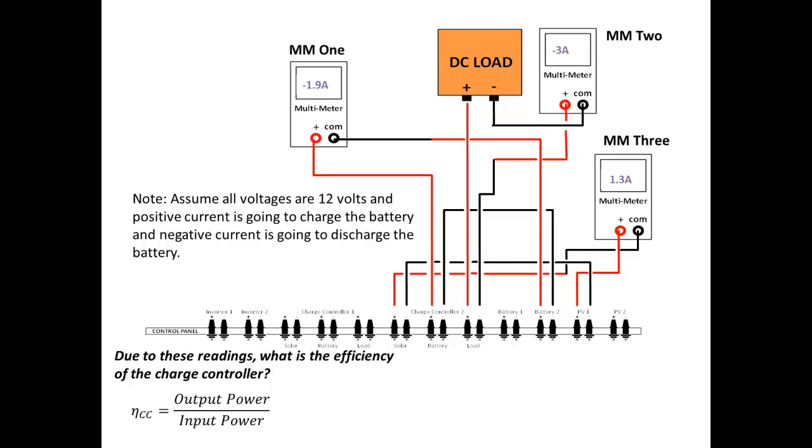In the current problem, our input power is the power of PV1 added to the power of battery 2, which comes out to be 38.4 watts. The output power is the power of the load, or 36 watts.